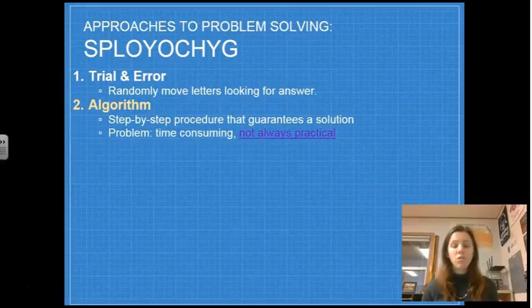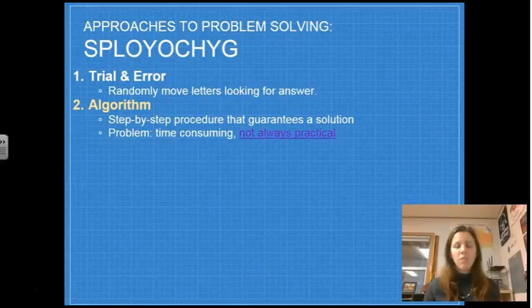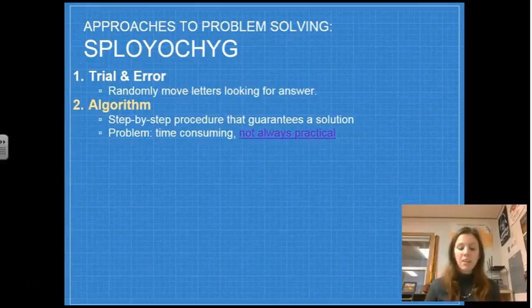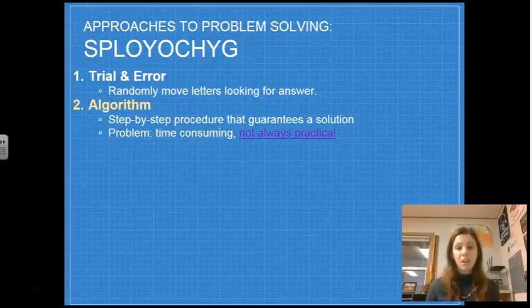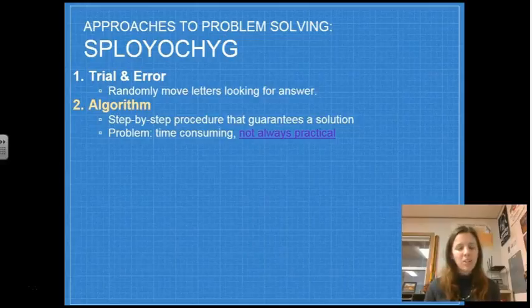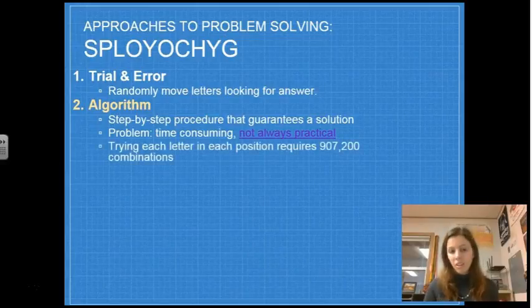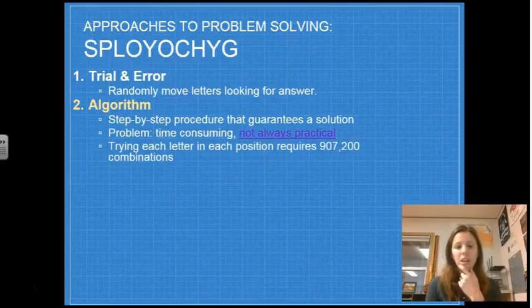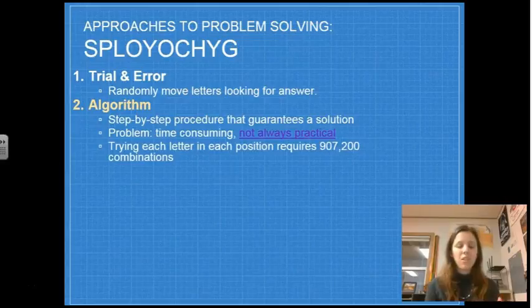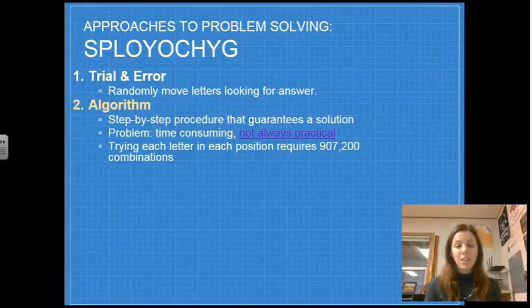So, for example, if I tell you to go to the grocery store, and it's a new grocery store that you've never been to before, and I ask you to get the milk, more than likely the milk is going to be in the back. But if you use an algorithm to get to the milk, you would go up and down every single aisle in the grocery store to get to the milk because you know if you go up and down every single aisle, eventually you're going to find the milk. So it's going to get you the correct solution, but it might just take forever. If you use an algorithm for psychology here, and this scrambled word, it actually has 907,200 combinations. So it would take you a really, really long time to use an algorithm to solve this word puzzle here. So an algorithm is not the best way of figuring it out, but it definitely is a problem-solving strategy. And I want to show you a big bang clip right now that kind of demonstrates what an algorithm is.